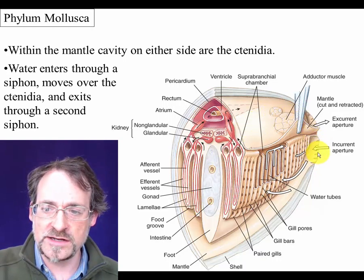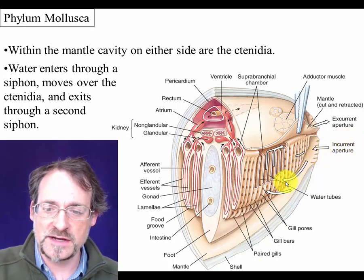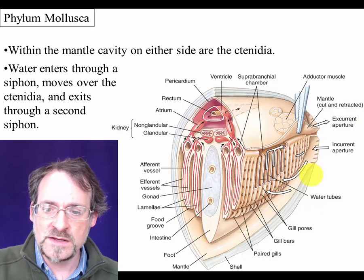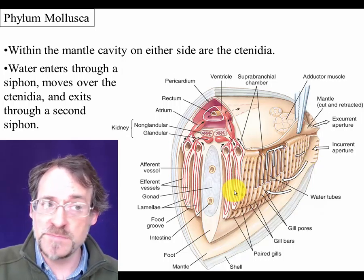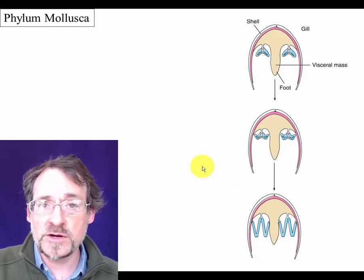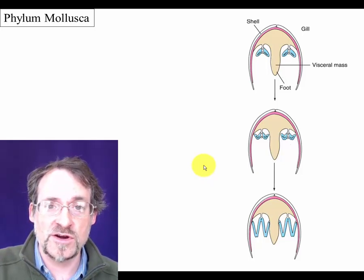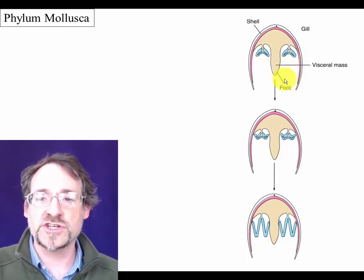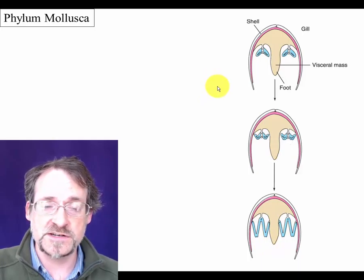There's a tube called the incurrent siphon at the back; water is shuttled into the body through the incurrent aperture and moves over the gills before going into another chamber that leads back out of the body. As it passes over the ctenidia, the water may carry food particles that get trapped in the gills. Over evolutionary time, the gills not only lengthened but folded into a W shape to massively increase the surface area they present to the water.